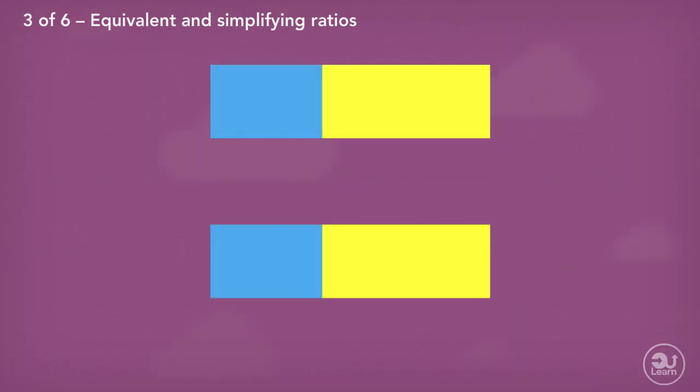For the first block, I'll break it into ten equal parts. Four parts will represent blue and six parts will represent yellow. Looking at the second block, which still represents a whole,